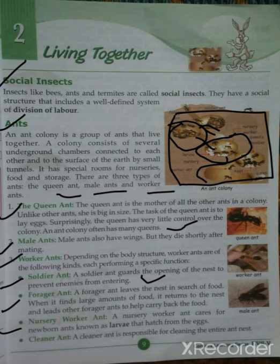The third kind is the nursery worker ant. A nursery worker ant cares for newborn ants, known as larvae, that hatch from eggs. They stay in the nursery chamber where the larvae hatch and take care of them. The last kind is the cleaner ant. A cleaner ant is responsible for cleaning the entire ant nest.